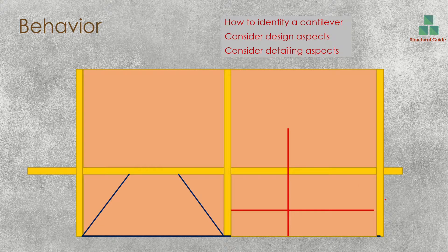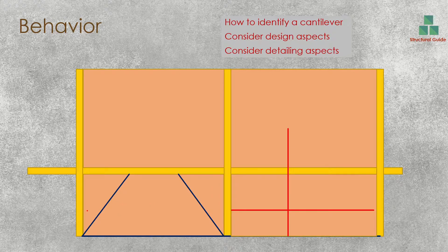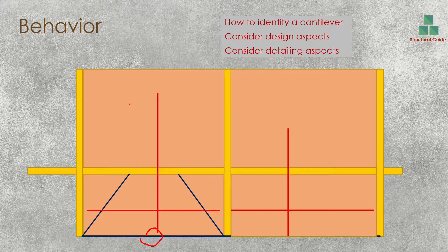When beam spans are higher, a hogging moment will be developed, and the area covered by the cantilever action is very large. When the gap between the two beams is high, we cannot span the reinforcement across them — the deflection will be higher. Therefore, we have to consider the cantilever behaviour and arrange the reinforcement in the cantilever direction accordingly. These things we have to keep in mind, along with the continuation of the reinforcement.